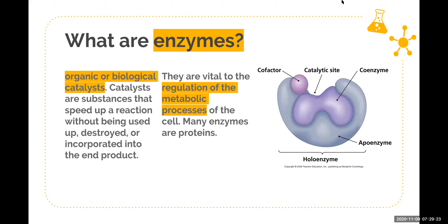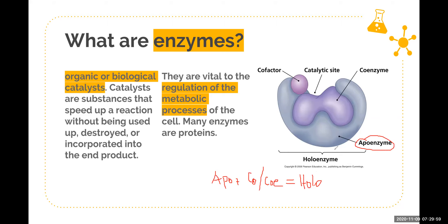The parts of an enzyme: the enzyme proper, the gray one, is called the apoenzyme. Apoenzyme plus the cofactor or coenzyme equals the holoenzyme. The holoenzyme is the whole enzyme including the cofactor and the coenzyme.